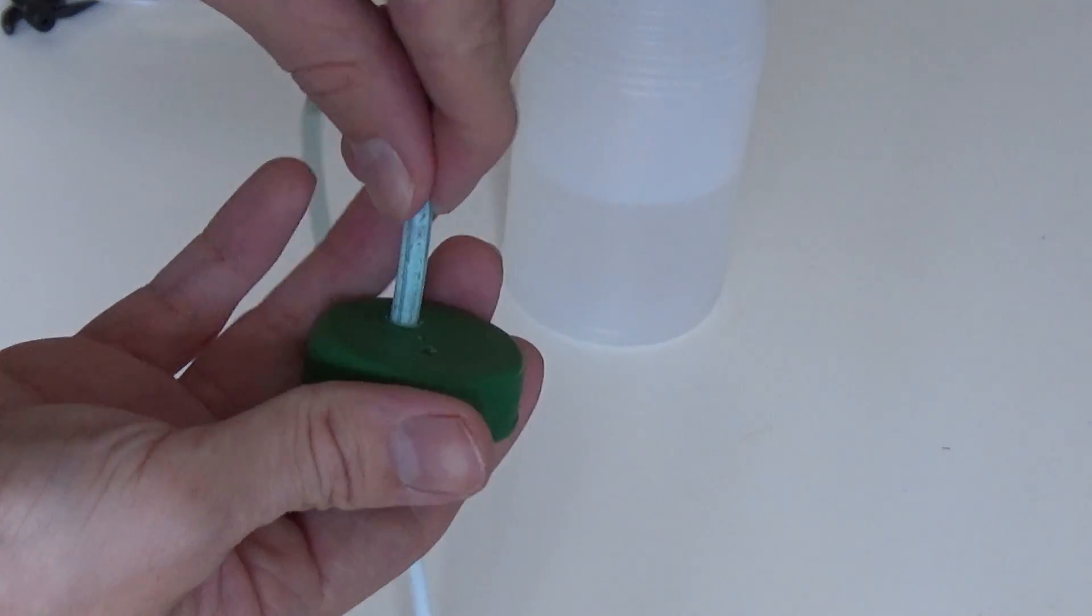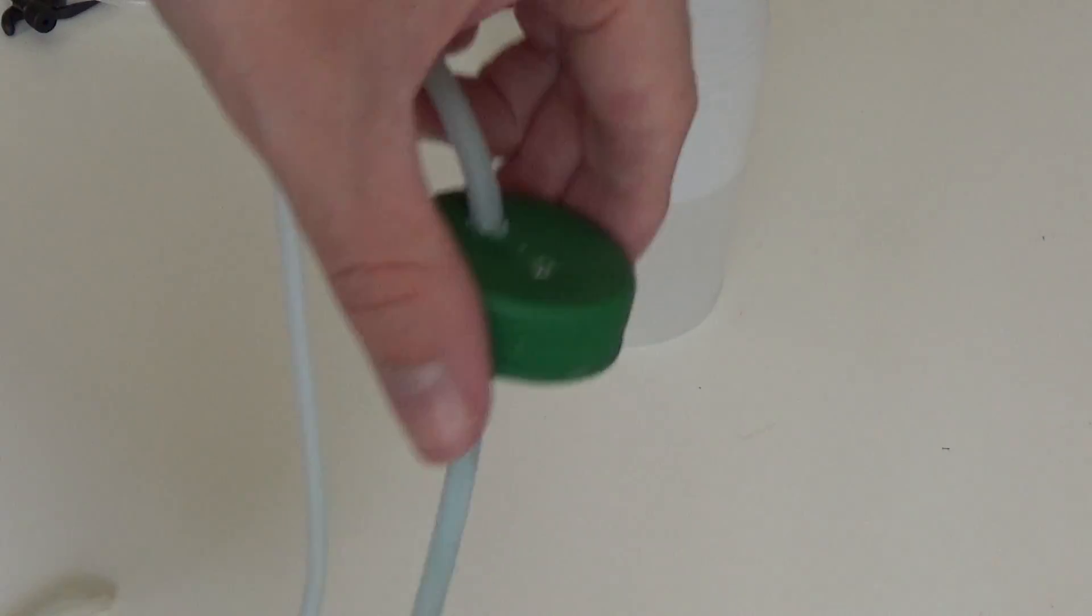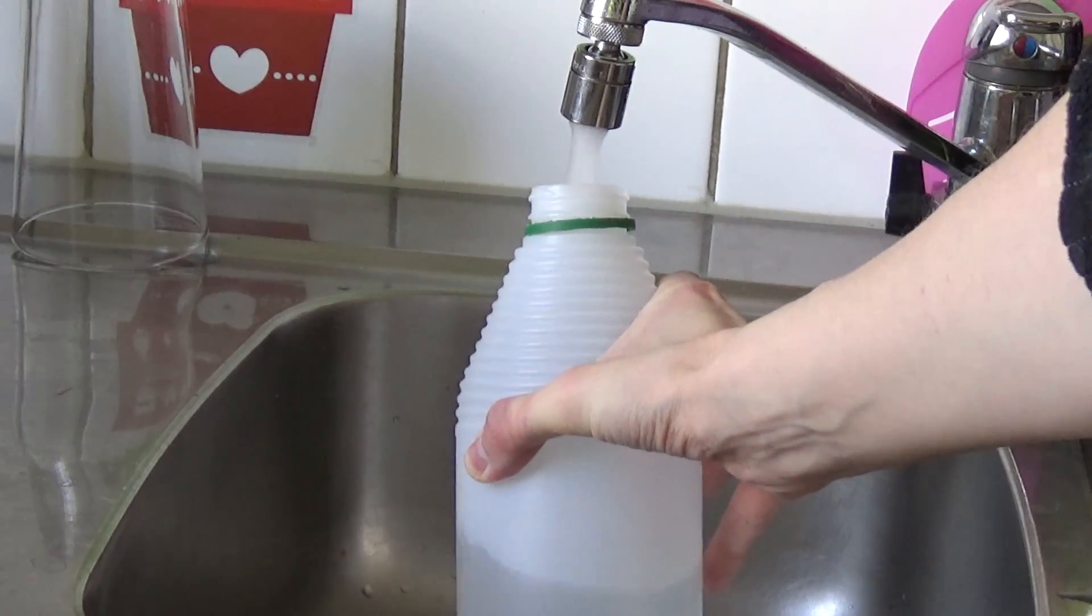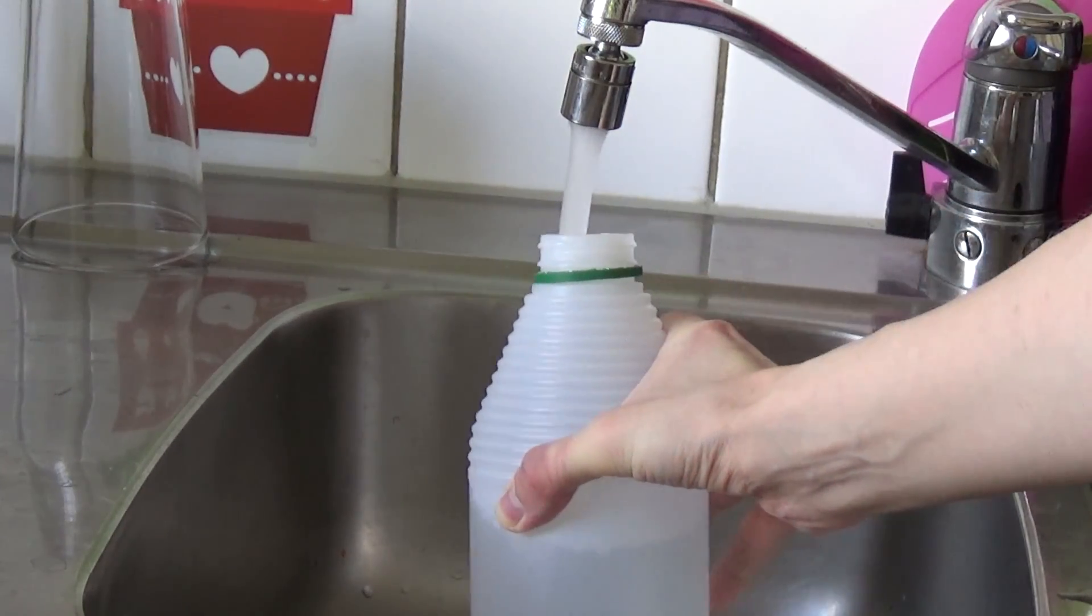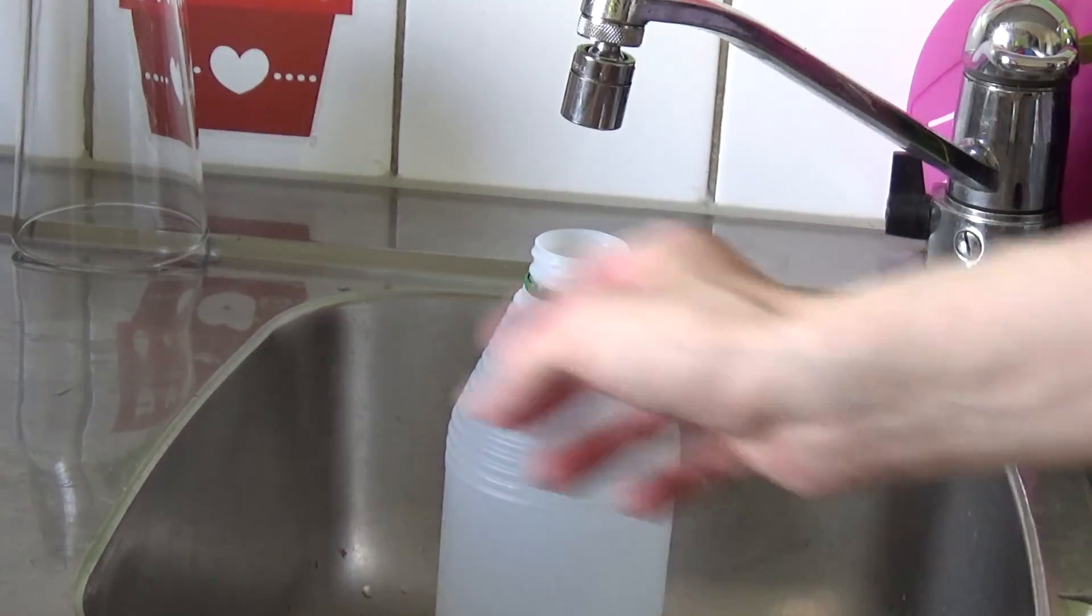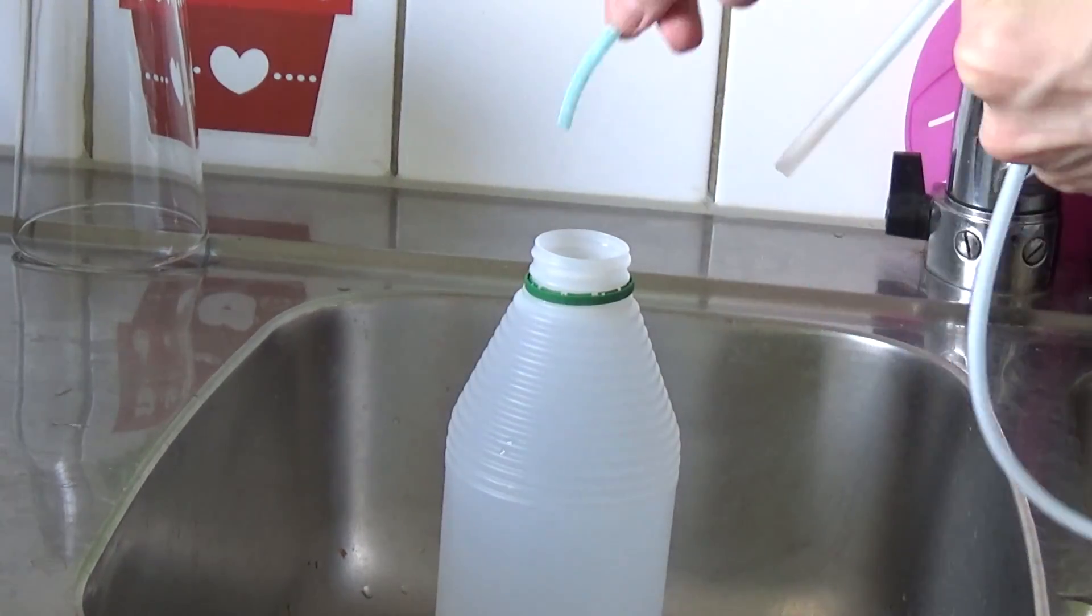Thread the tube through the lid. Now you fill up the bottle with water. Once it's full, close the lid with the tube inside the bottle.